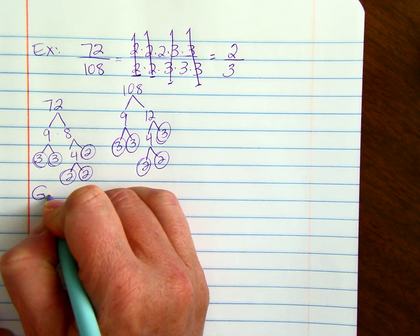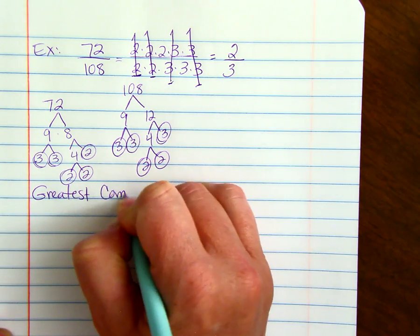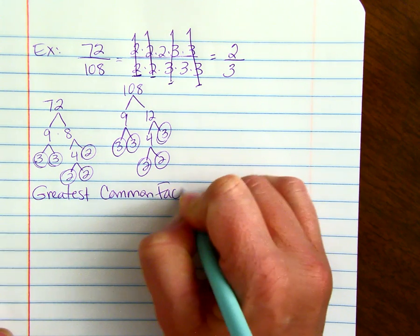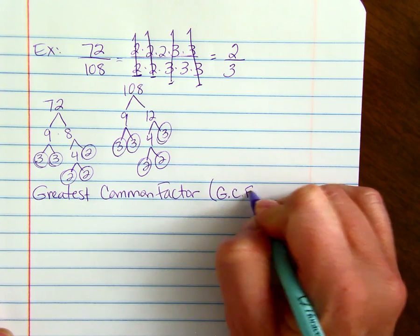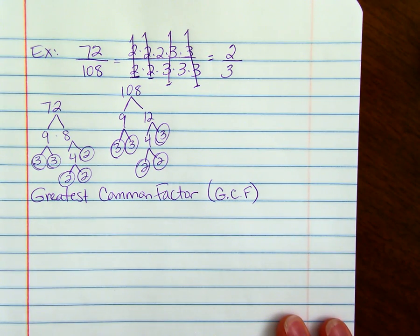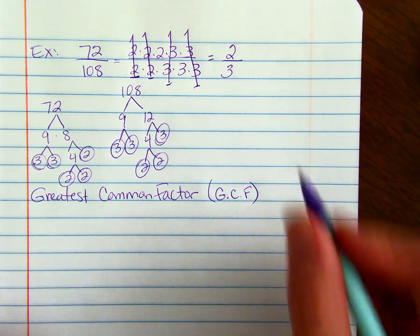The greatest common factor, which from here on out, let's write it GCF, so I don't have to write out greatest common factor every single time. It's the largest whole number that is a factor of every number in the set.